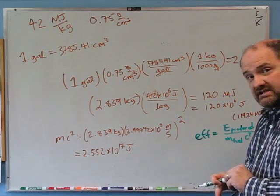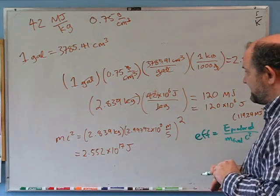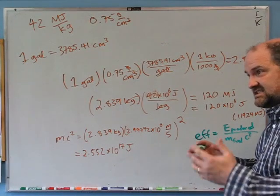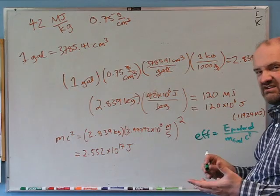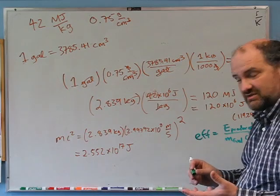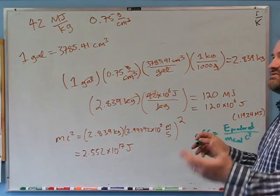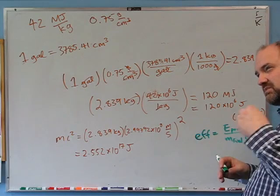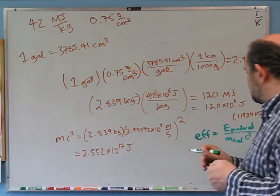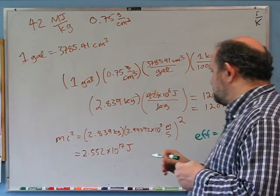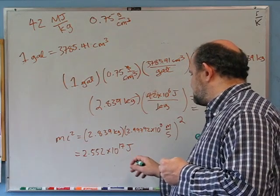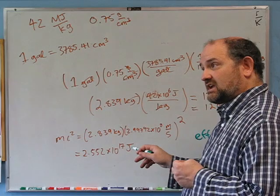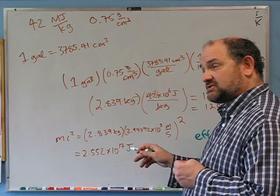If I knew octane's chemical formula I could guess the reaction. Let's guess: 'oct' suggests eight carbons. For each carbon you're going to get two oxygens and probably two more to go with the hydrogens. So let's assume gasoline has eight carbons, a bunch of hydrogens, and four oxygens per carbon.